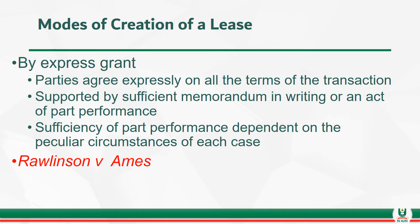The modes of creation of a lease. There are two major ways. We can create a lease by express grant, in which case the parties will agree on all the terms of the lease and their agreement will be evidenced in writing — a sufficient written memorandum — or there will be an act of part performance on the part of the lessee. Where there isn't sufficient memorandum in writing but there is proof of part performance, it will be taken that the lease has been created by express grant. What qualifies as part performance will depend on the circumstances of each case. An example of an express creation of a lease by part performance was what occurred in the case of Rawlinson v Ames.